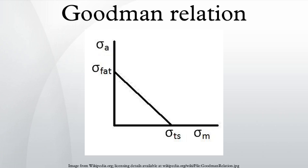A Goodman diagram, sometimes called a Haigh diagram or a Haigh-Soderberg diagram, is a graph of mean stress versus alternating stress, showing when the material fails at some given number of cycles. A scatterplot of experimental data shown on such a plot can often be approximated by a parabola known as the Gerber line, which can in turn be approximated by a straight line called the Goodman line.